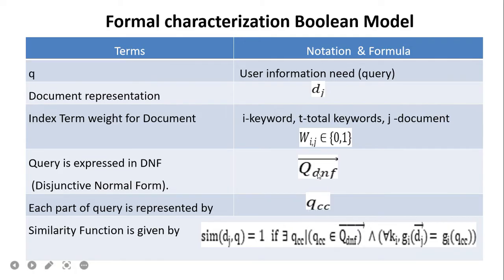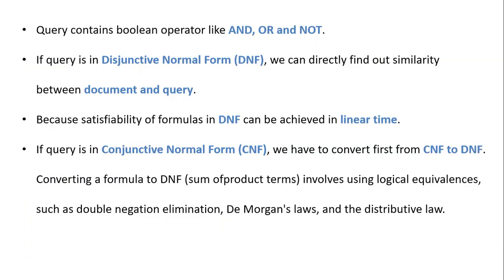In the similarity function, if that keyword is present in the qcc and also present in the document dj, then we get a value of 1, otherwise 0. This similarity function will be better understood when we solve the example. If the query contains Boolean operators AND, OR, NOT and is already in DNF form, we can directly find the similarity between document and query, because satisfiability for formulas in DNF can be achieved in linear time.